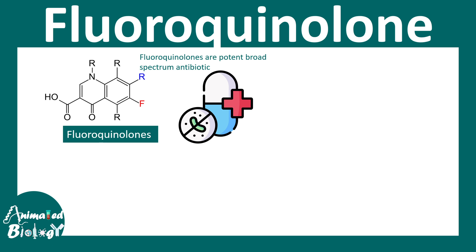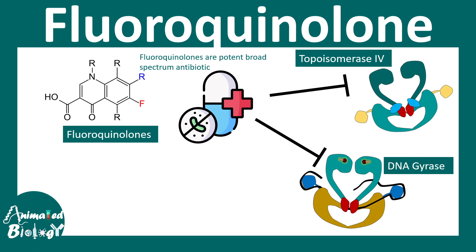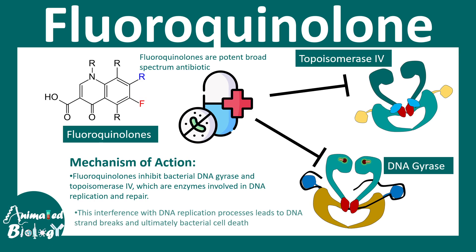Fluoroquinolones can inhibit the DNA gyrase enzyme or topoisomerase 4 enzyme. When these enzymes are inhibited, that leads to abrogation of the DNA replication process and accumulation of double strand breaks in the DNA, leading to bacterial death. If the bacteria cannot replicate its DNA and has double stranded breaks, it will die — once it cannot amplify itself, it is harmless.